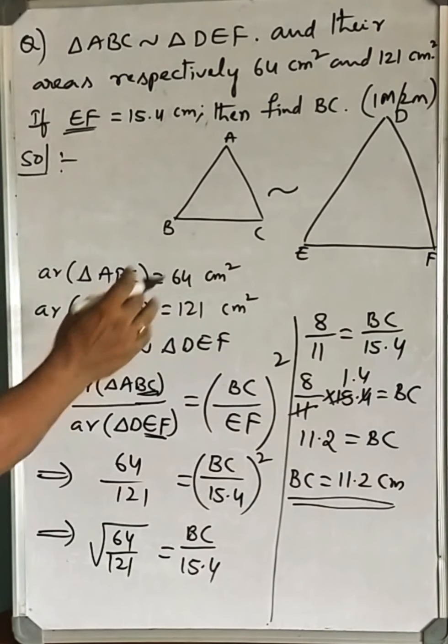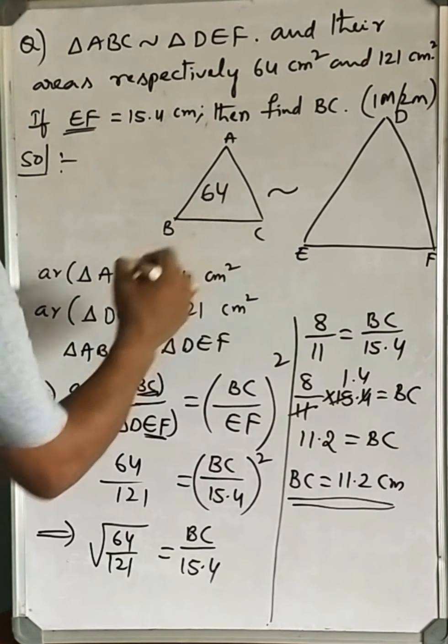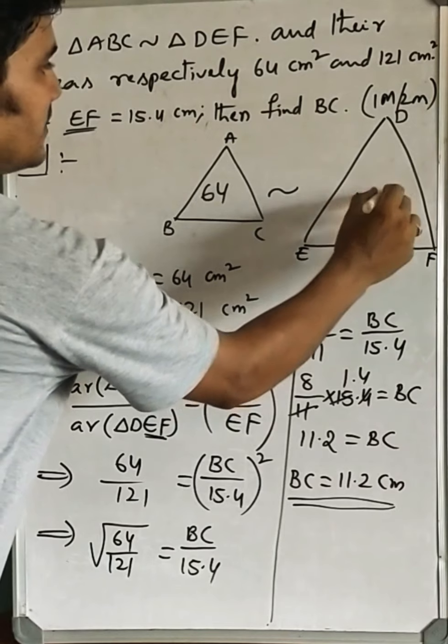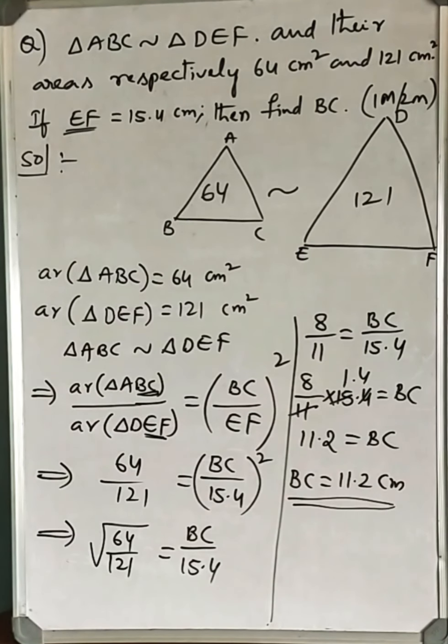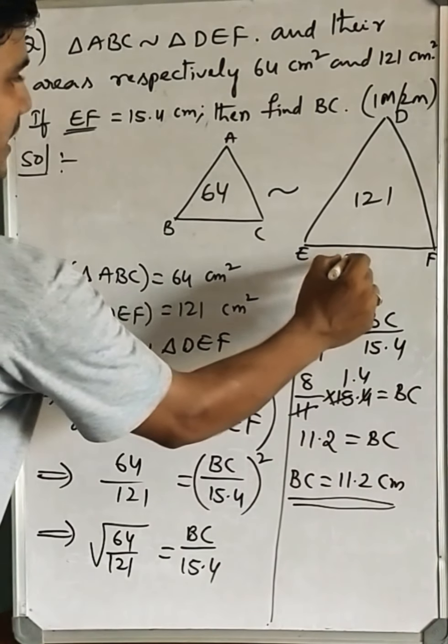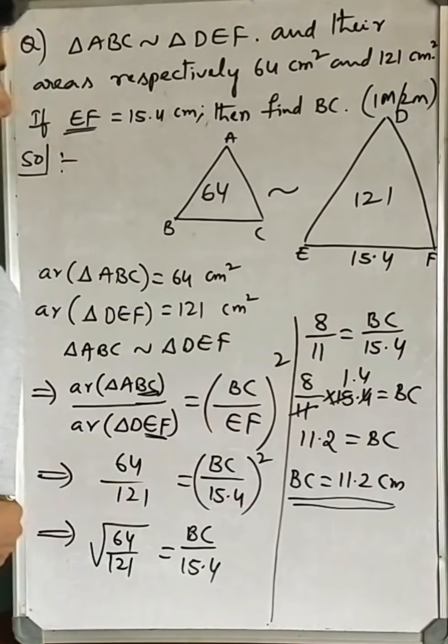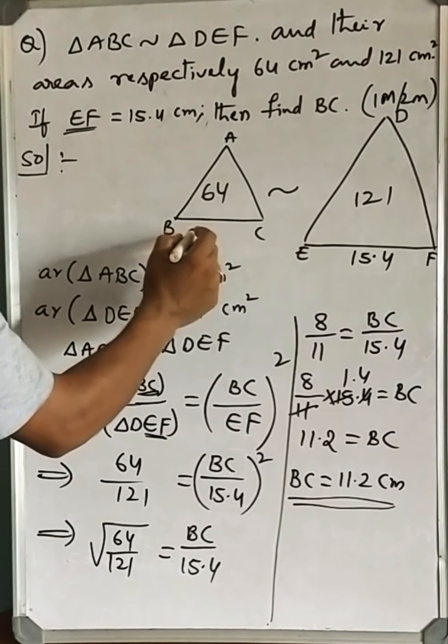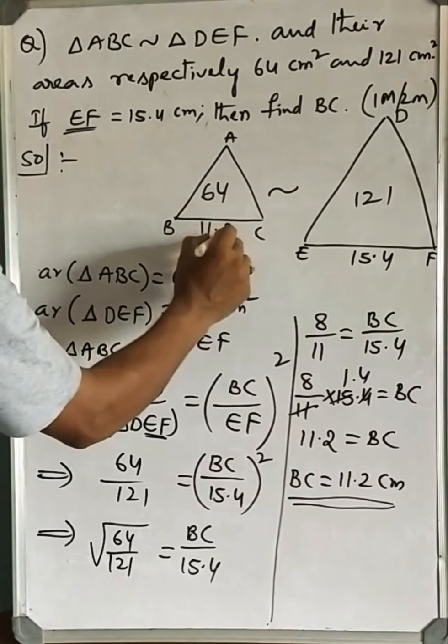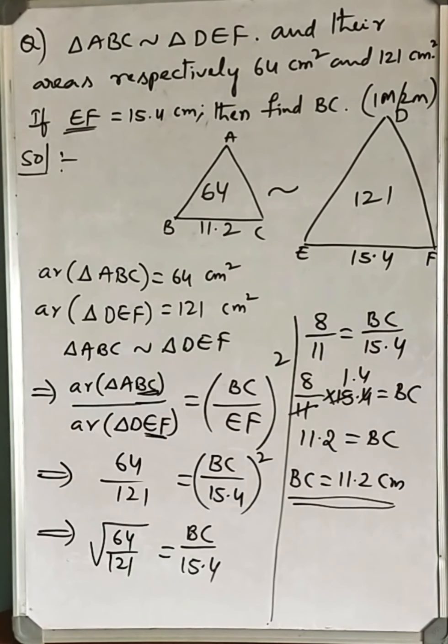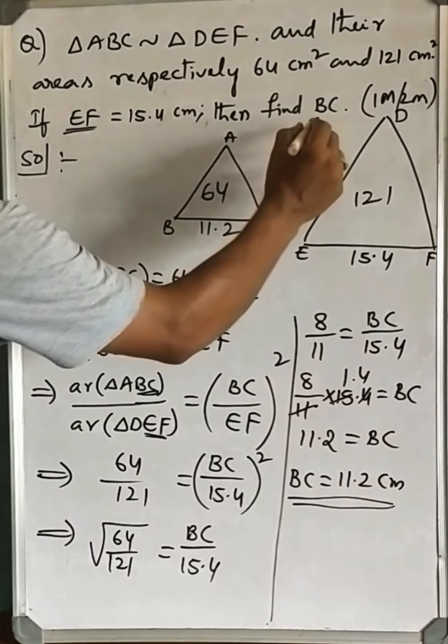If these two triangles are similar, with areas 64 square centimeters and 121 square centimeters, and you are given this side as 15.4, the corresponding side BC becomes 11.2. This is how we find the value of BC.